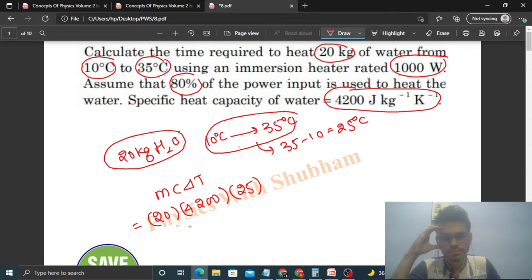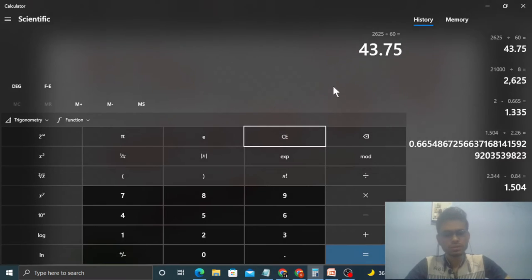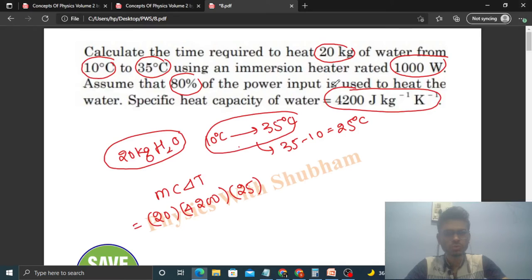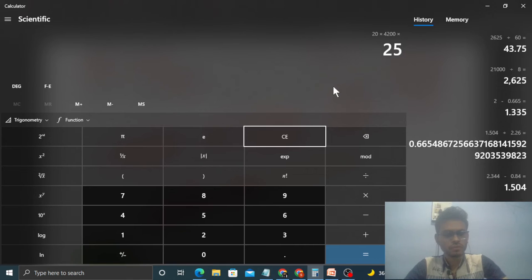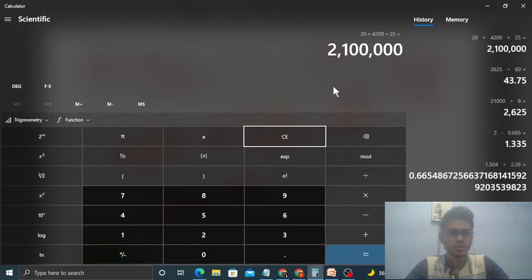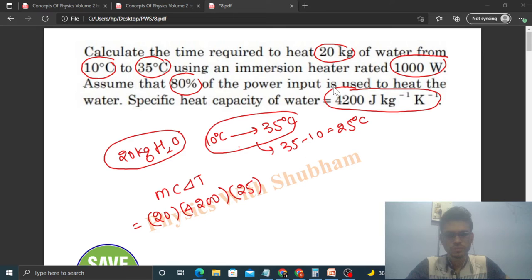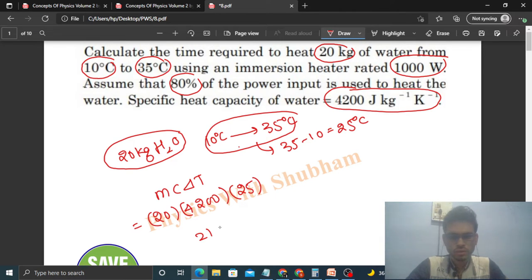So how much heat required? 20 into 4200 into 25. So that is 21 with 5 zeros joule. So this much heat you need to supply.